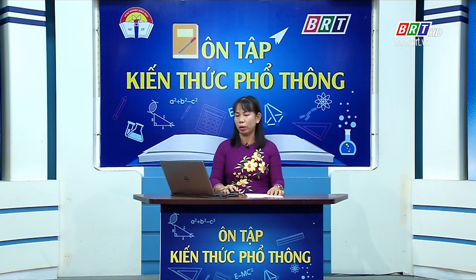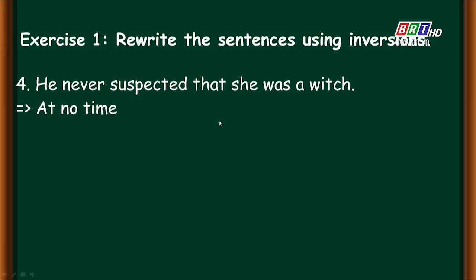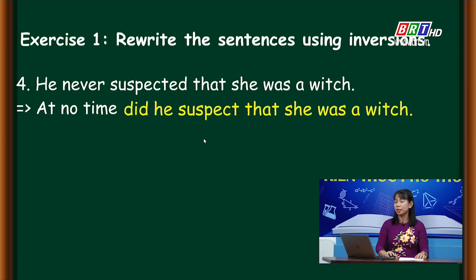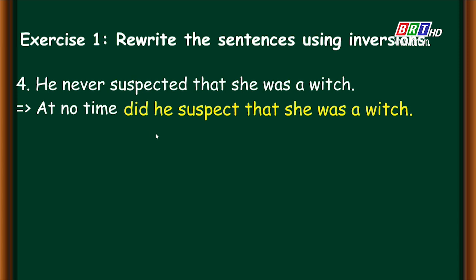Number four: 'He never suspected that she was a witch.' Người ta yêu cầu dùng 'at no time' thay vì 'never' — vì 'never' đồng nghĩa với 'at no time'. Đáp án: 'At no time did he suspect that she was a witch.' Chúng ta lưu ý nhớ thì để đảo cho phù hợp.